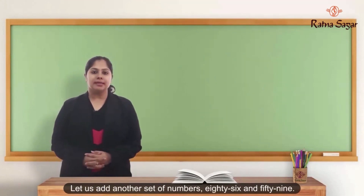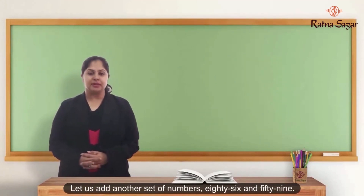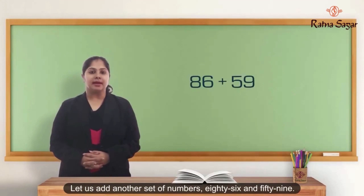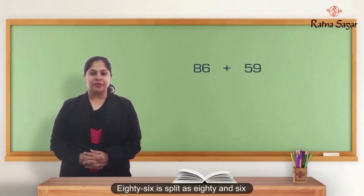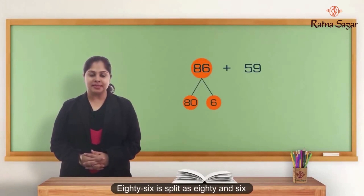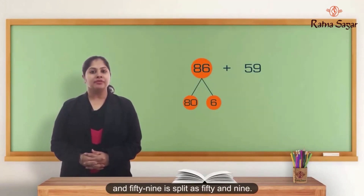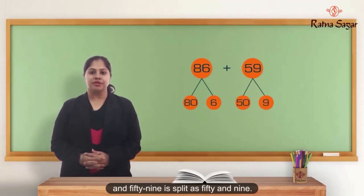Let us add another set of numbers: 86 and 59. Now let us begin with splitting the numbers. 86 is split as 80 and 6, and 59 is split as 50 and 9.